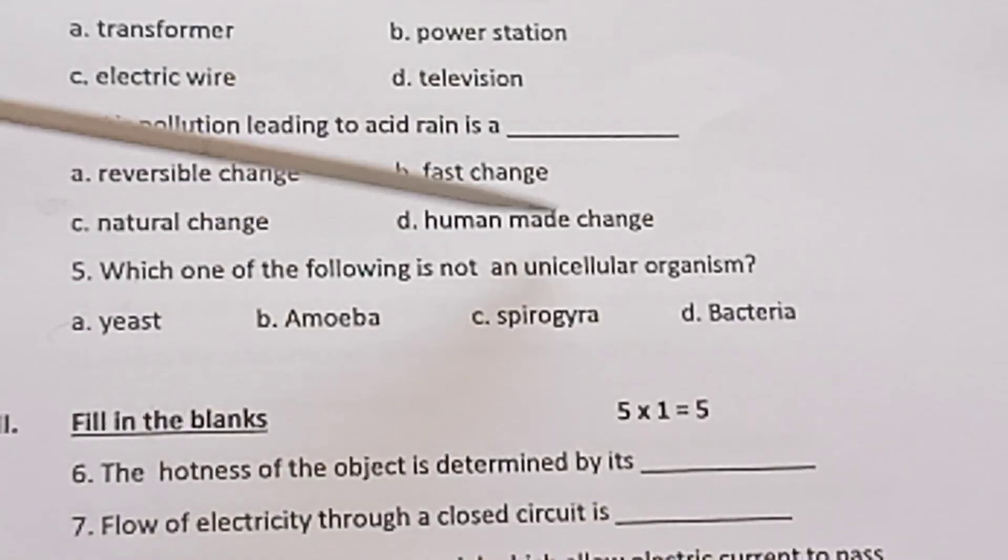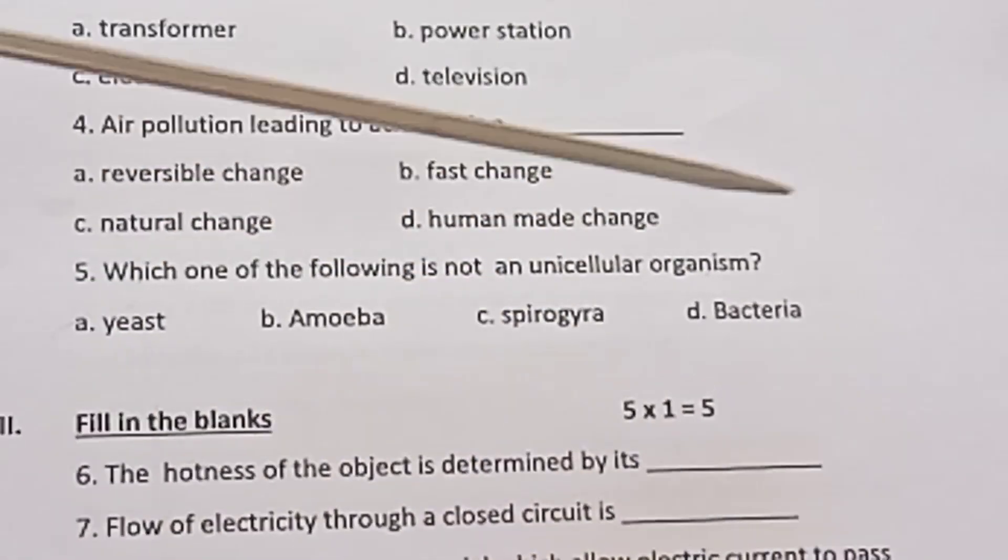Question 5: Which one of the following is not a unicellular organism? a) Yeast, b) Amoeba, c) Spirogyra, d) Bacteria.